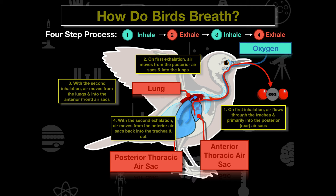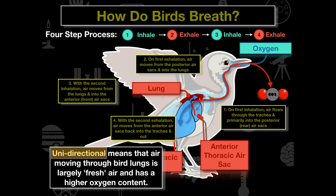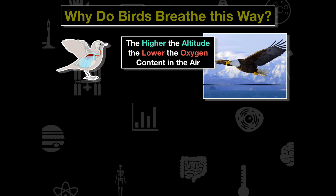That final exhale is where carbon dioxide and waste products are removed from the bird. We call this process unidirectional — the air moving through the bird's lungs is mostly fresh air with very high oxygen content. Using this four-step cycle, the bird gets a continuous supply of fresh oxygen for its respiratory system.